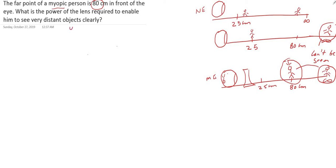Let us now solve the numerical. In this case, the object is at infinity, so u is equal to infinity. The image should form at 80 centimeters, which is equal to 0.8 meters. The image forms at the far point so that it can be seen by the myopic eye. So u is infinity and v is minus 0.8 meters.